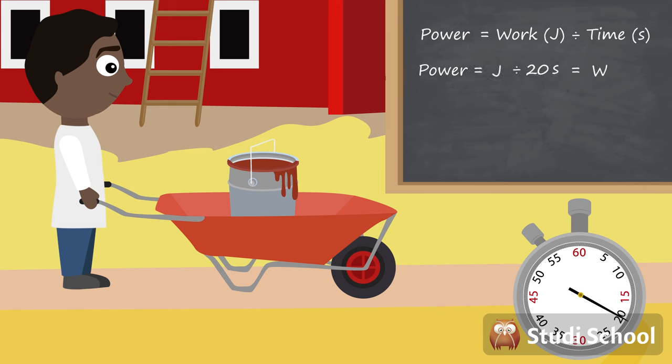If Philip took 20 seconds to move the wheelbarrow and did a thousand joules of work, his power is 50 watts.